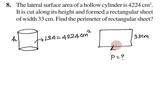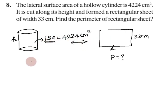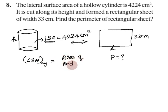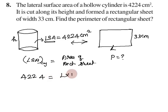First, we will find the length. You can imagine this sheet — we have a hollow cylinder, and the paper will be cut to form the hollow cylinder shape. So the lateral surface area equals 4224 cm², which is equal to 33 times the length.